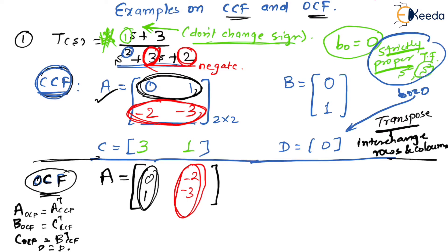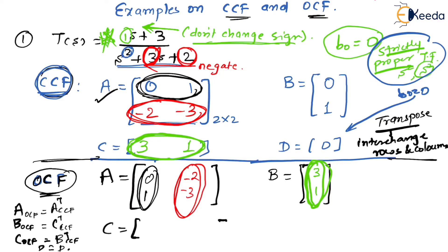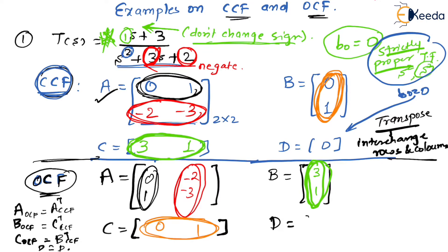Now B_OCF equals C_CCF transpose. C_CCF is [3, 1], so its transpose becomes the column vector [3; 1]. For C_OCF, it equals B_CCF transpose. The first column of B_CCF is [0; 1], so transposing gives C_OCF = [0, 1]. D is again 0, the same as before. That solves the first example completely.